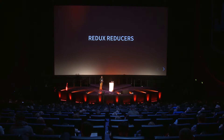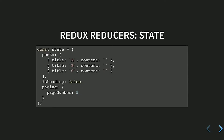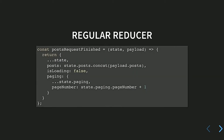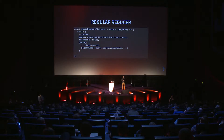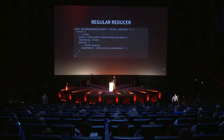Redux reducers are a very good candidate for point-free style. Imagine our state looks like this: we have an array of posts, a boolean flag indicating whether we're loading data from the backend, and an object describing the paging of some grid. There is a reducer written for a specific action — the action indicating that we've just finished loading posts from the server — where we concatenate the new posts with existing ones, set isLoading to false, and increment the page number.